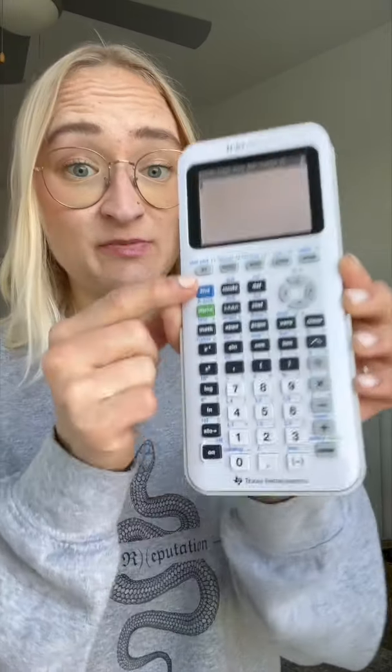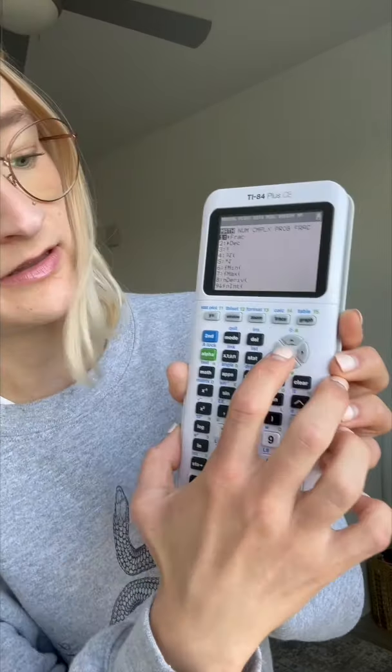Some functions are buttons, but you need to press second before you click the button, like the square root or e to the x. Others don't get a button at all. For example, absolute value is hidden in math num right there.